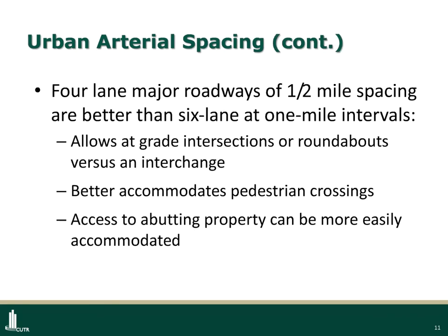In the access manual, what we think might be a logical framework is four-lane major roadways at half-mile spacing intervals, versus at one mile, which can break down at intersections very quickly. The other benefit of the four-lane, of course, is it allows at-grade intersections or roundabouts versus grade-separated interchanges, better accommodates pedestrians, and can start to build the network needed for access to abutting properties.